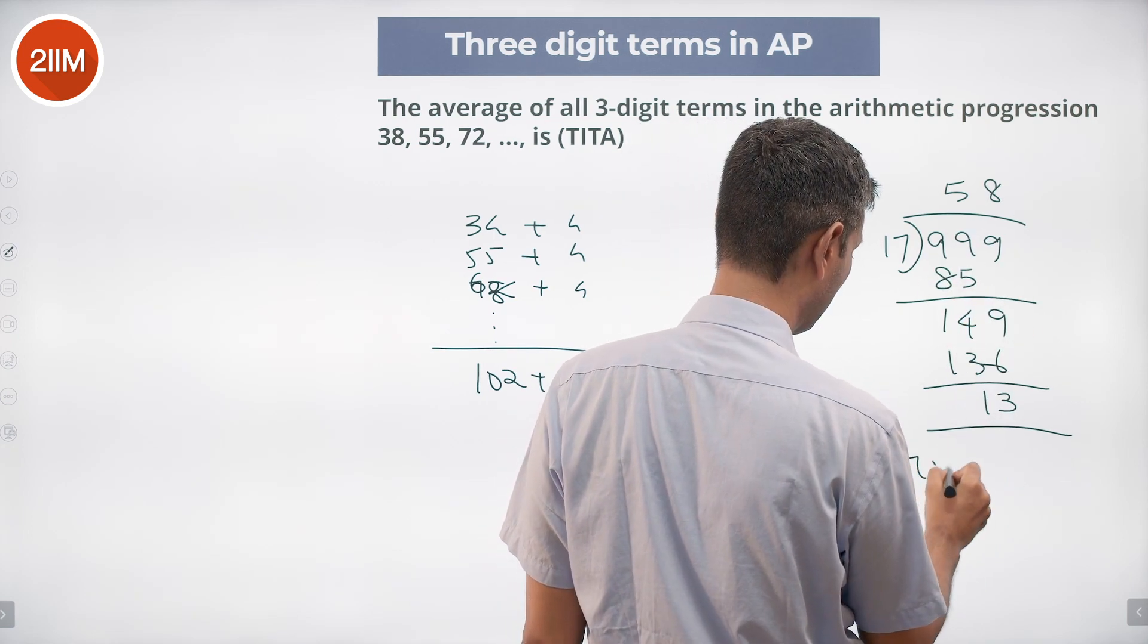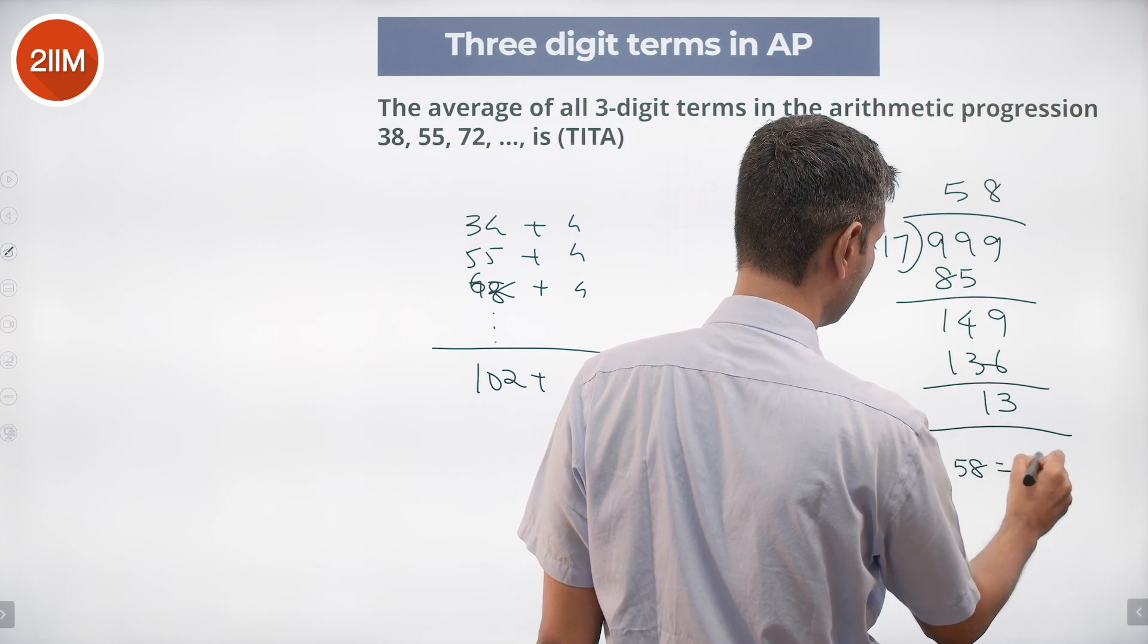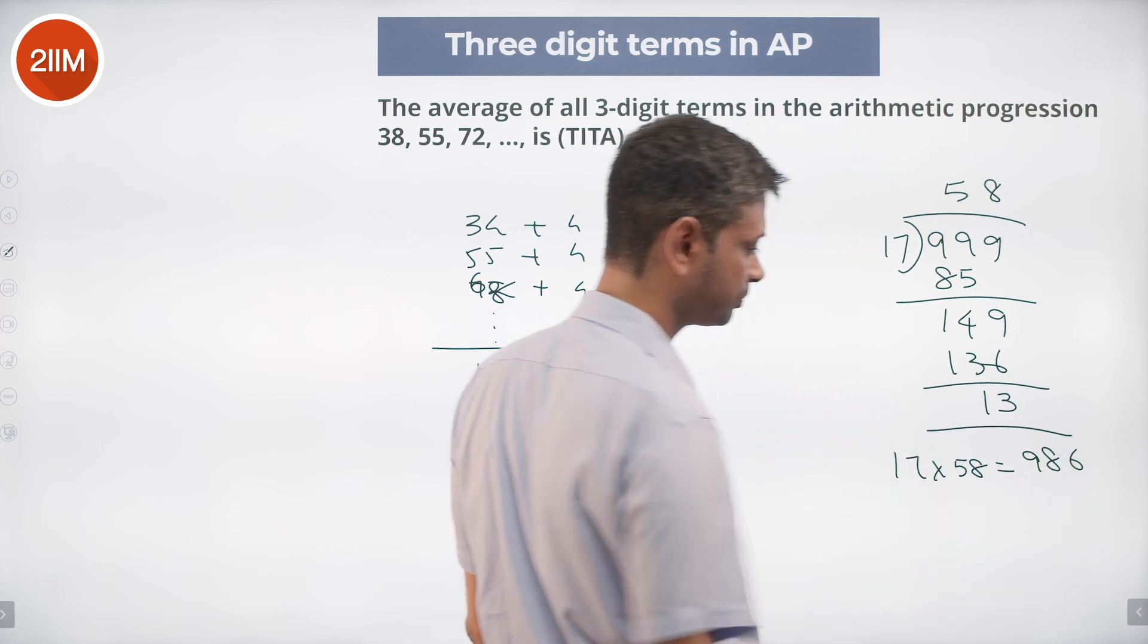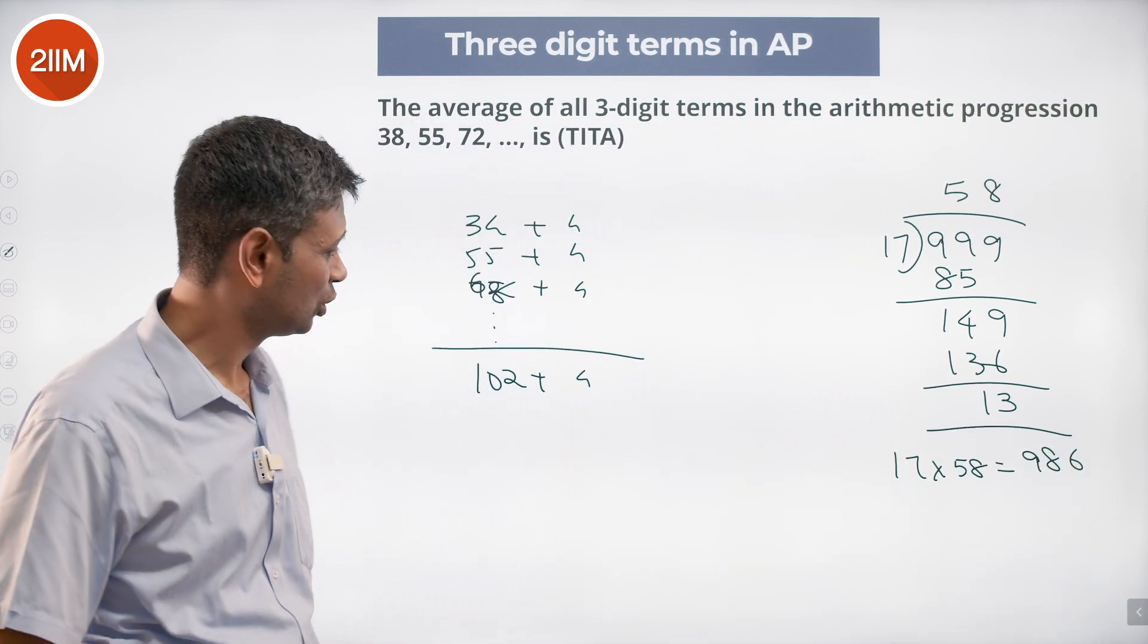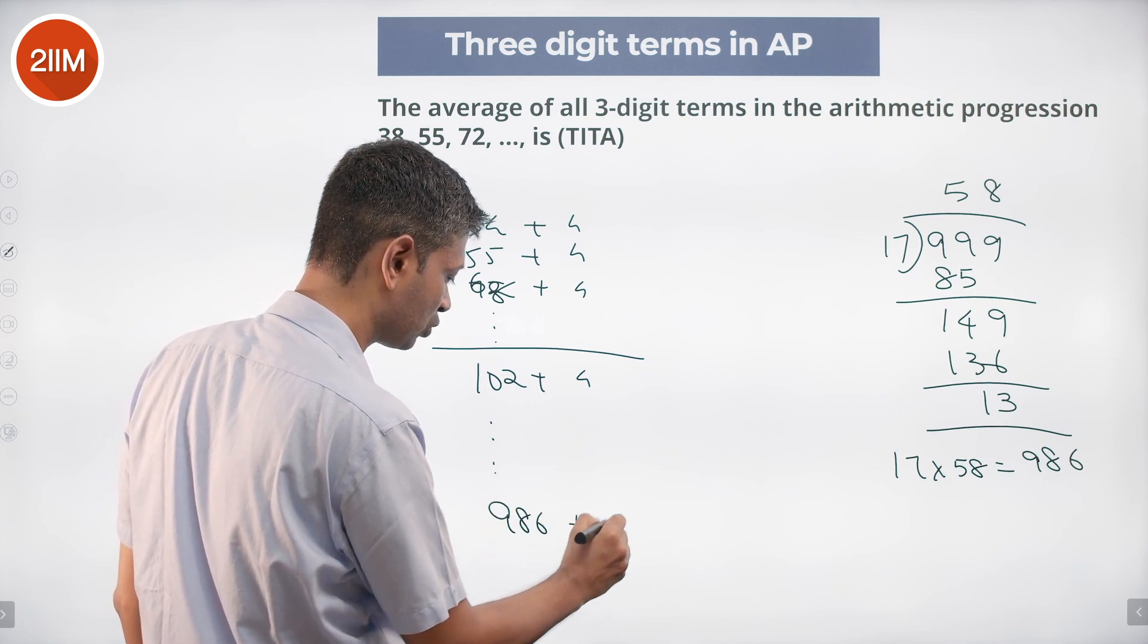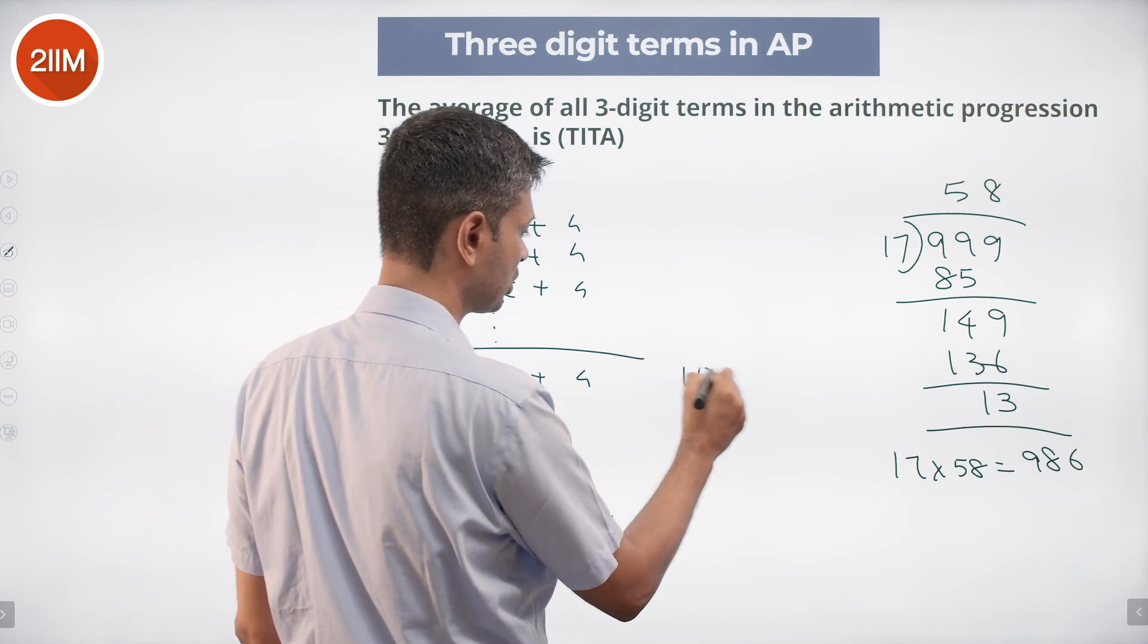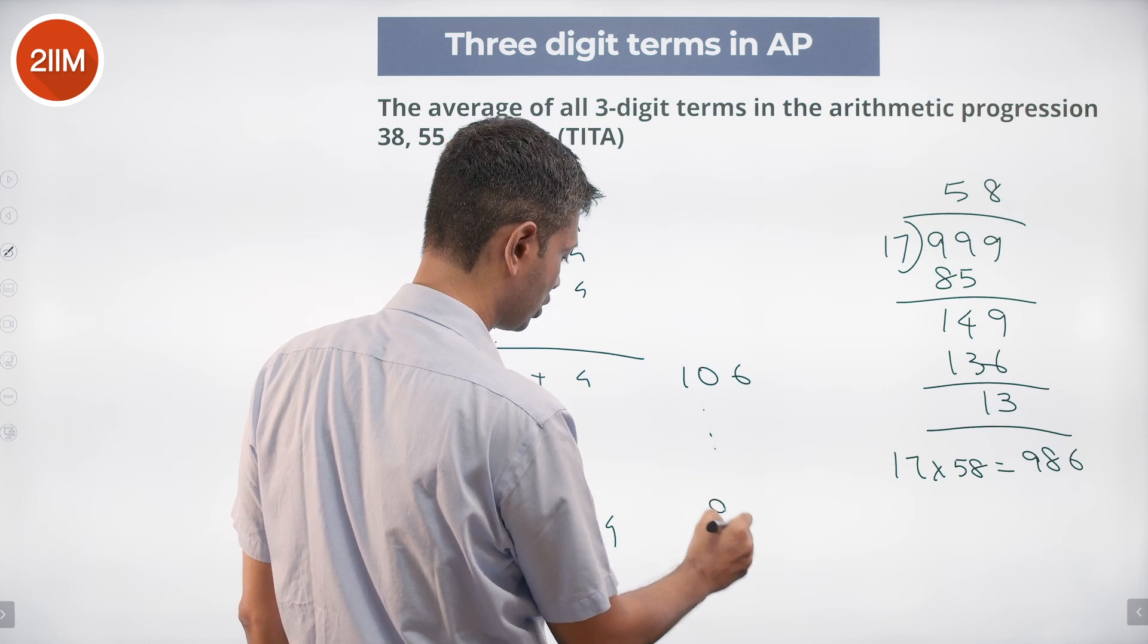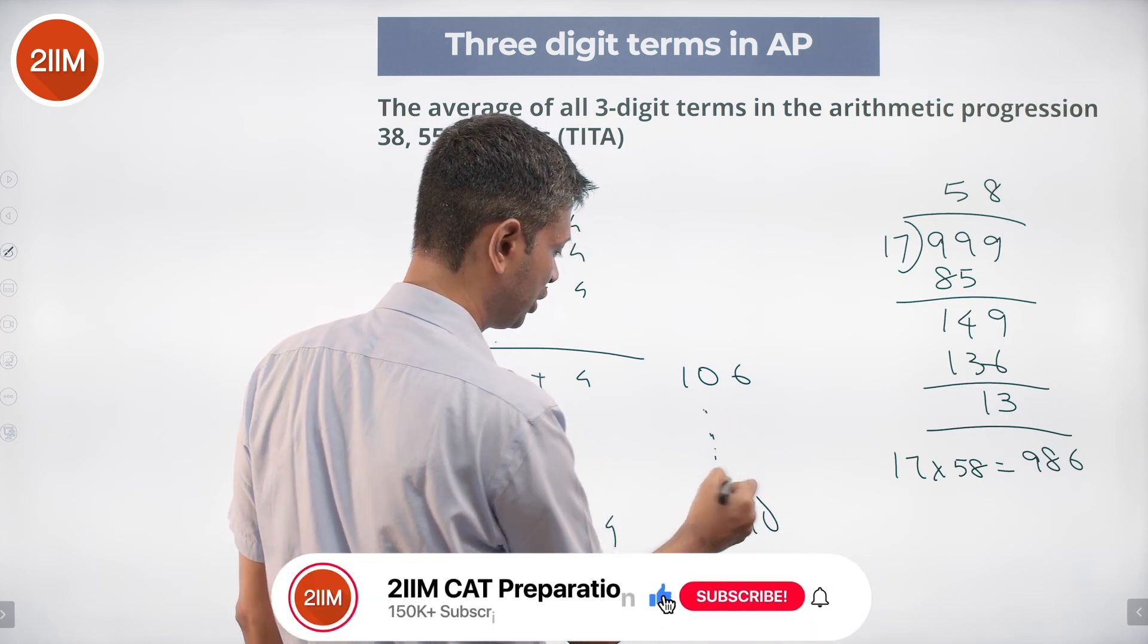17 into 58 is 986. We've got that much, so the last term here is going to be 986 plus 4. The first term is 106, the last term is 990. You have a bunch of terms in between.